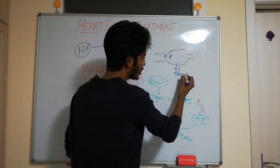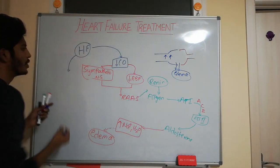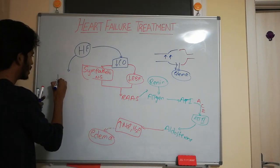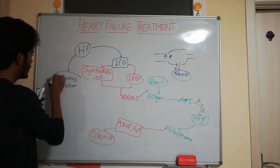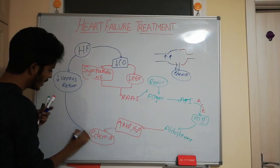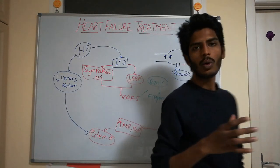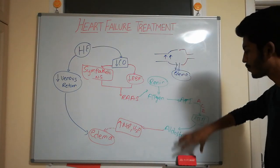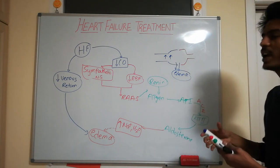The blood which should come back to the heart is not coming back, leading to decreased venous return. When venous return is decreased, there will be edema. So this is the story of how heart failure pathology progresses. Now we know the process — let's see where we can use this mechanism to treat the patient.